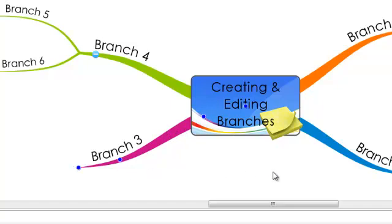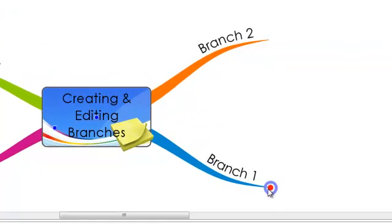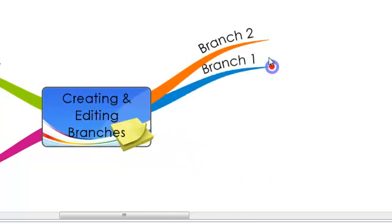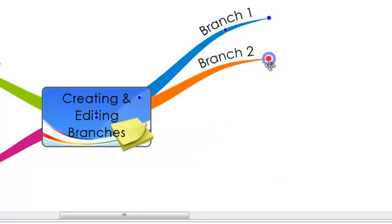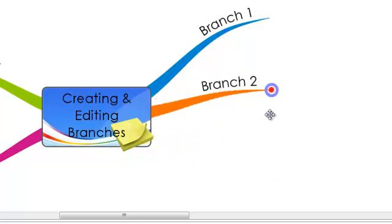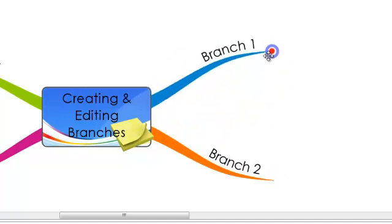To recap, to move the position of a branch, hover your mouse over the end of the branch until you find the blue circle. Click on it and drag the branch into your desired position.